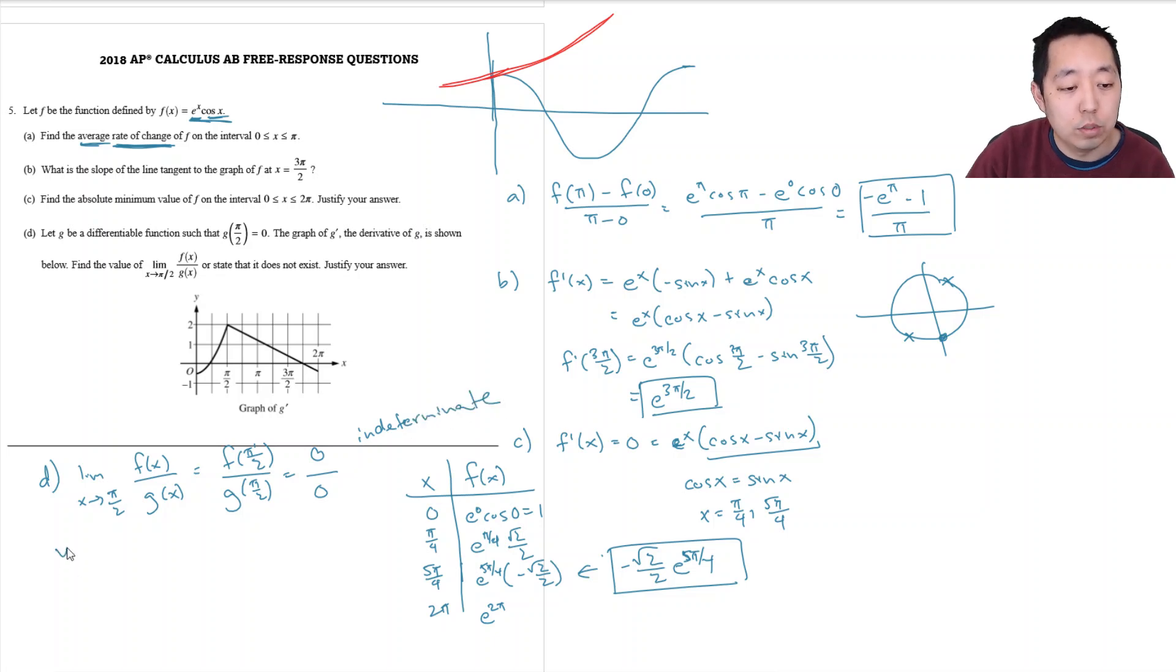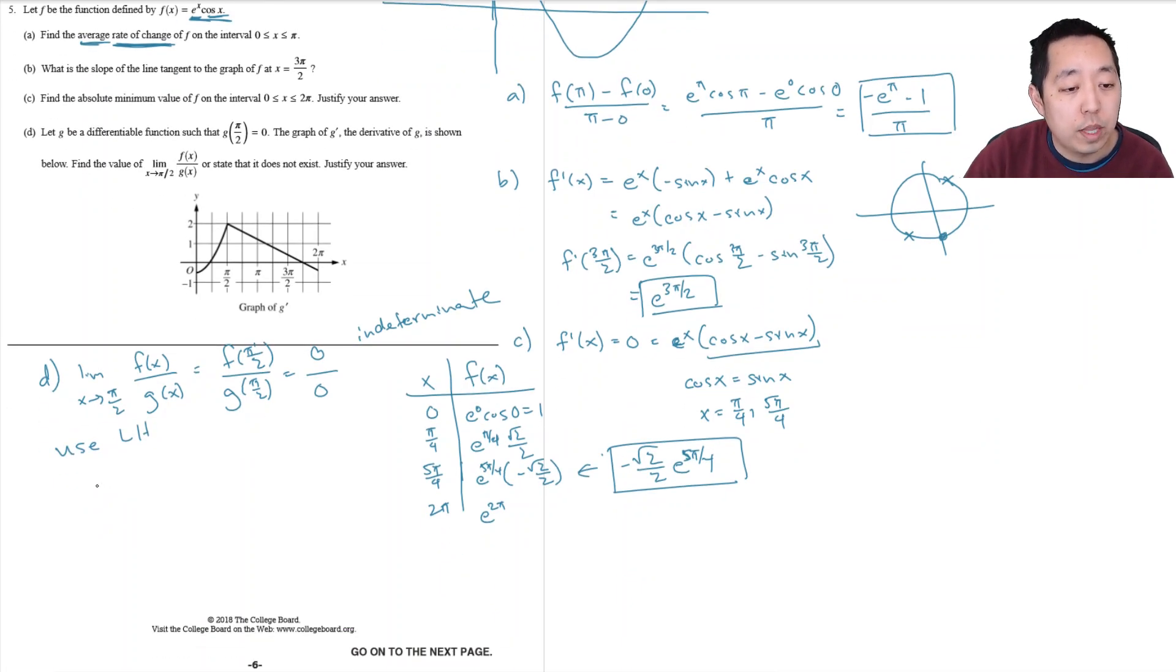So we use L'Hopital's rule. That means I can do x goes to pi over 2, f prime of x over g prime of x, because the function is differentiable.